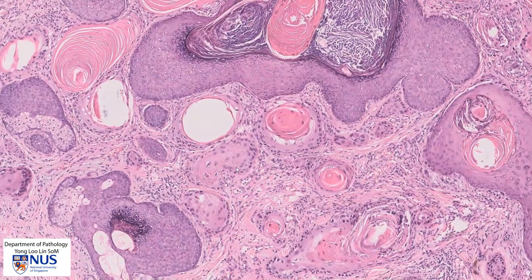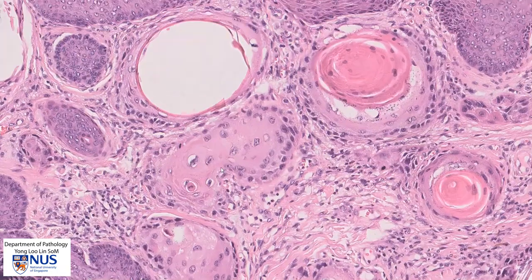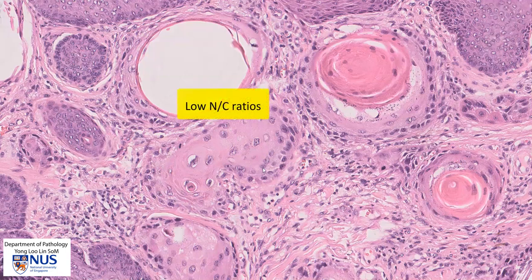Here we can see some irregular islands or nests of malignant squamous cells. The nuclei are quite irregular, they have prominent nucleoli, but they also have quite abundant cytoplasm. Hence, the NC ratios or nuclear cytoplasmic ratios are still quite low.